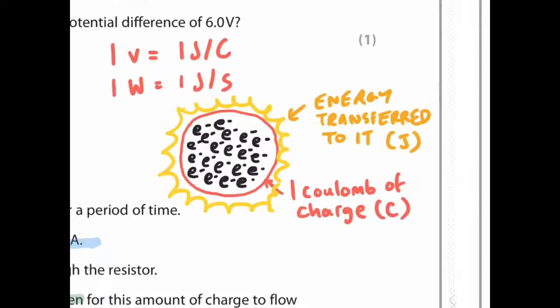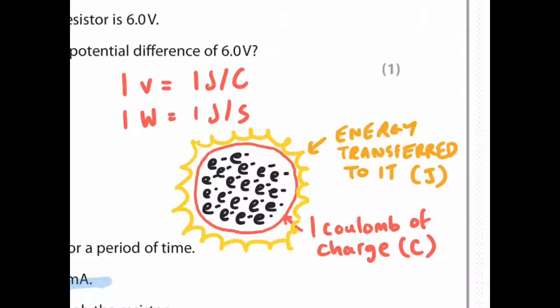Potential difference is basically how much energy is stored within a certain packet of electrons we call a coulomb. For example, this is a coulomb of charge, a packet of electrons. A power supply will transfer energy to this packet of electrons. The energy is measured in joules, and this is a coulomb of charge, so it's joules per coulomb. One volt is one joule per coulomb. Also, one watt in power is one joule per second, how much energy is transferred per second. Voltage is joules per coulomb. Watts in power is joules per second.